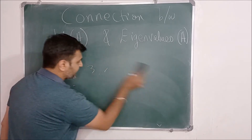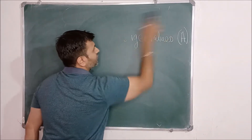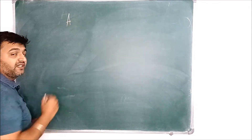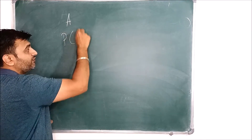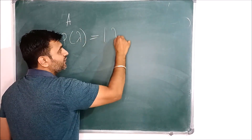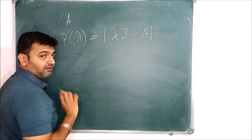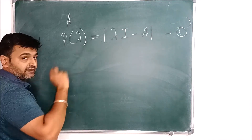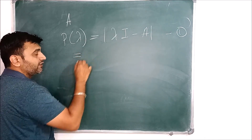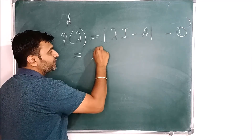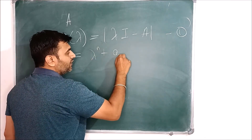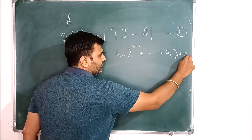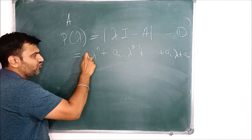Now let us try to prove this theorem. The proof is very simple. Given a matrix A, how do you find the eigenvalues? You first find the characteristic polynomial. So what is P of lambda? It is the determinant of lambda I minus A — let me call this equation 1. When you expand this determinant, you get a polynomial in lambda: lambda raised to n plus a_(n−1) lambda raised to n−1, plus ... plus a_1 lambda plus a_0. I can assume the leading coefficient to be 1.